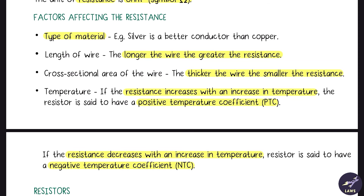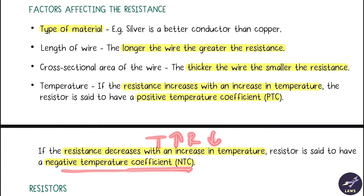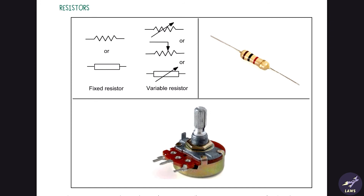Temperature also affects resistance. If temperature increases and resistance increases, we say it has a positive temperature coefficient (PTC). If temperature increases and resistance decreases, it has a negative temperature coefficient (NTC). Resistors can be fixed — where the value is fixed — or variable, where the value can be varied.